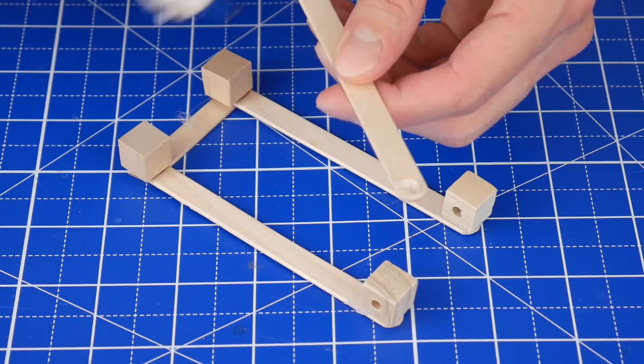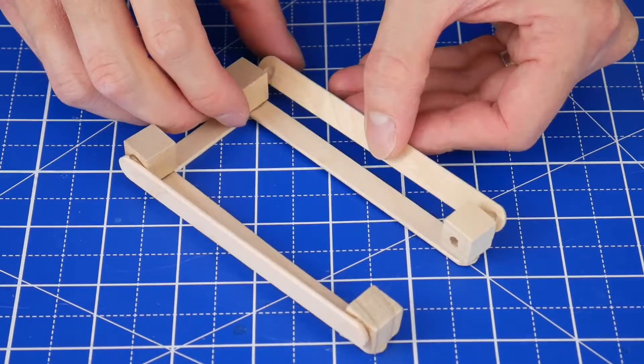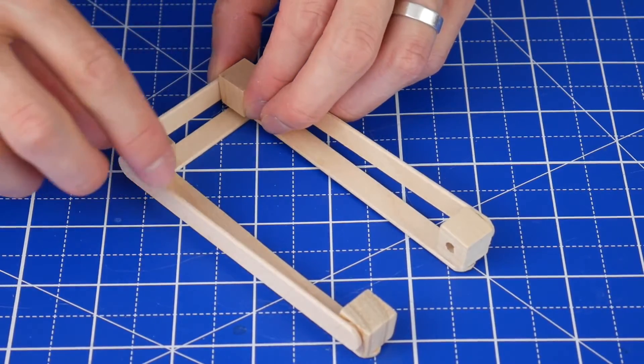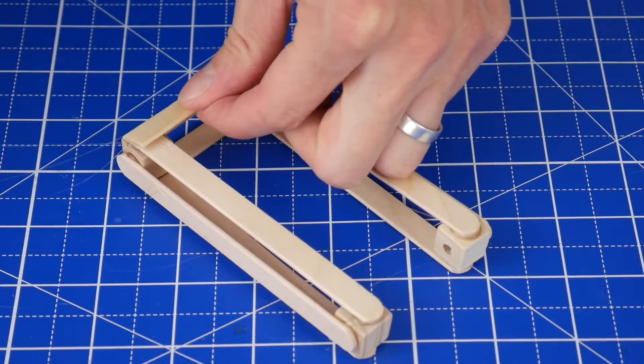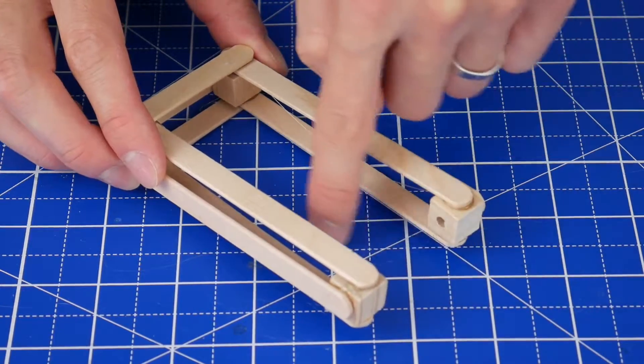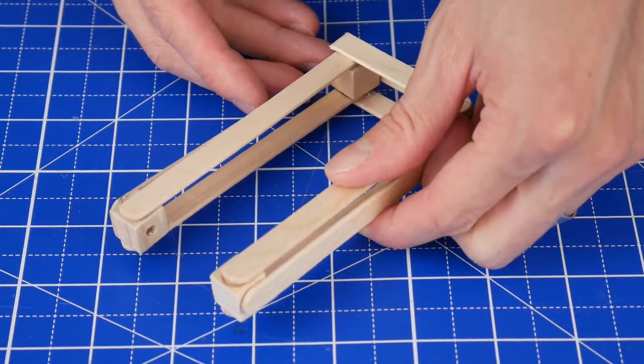Then glue more sticks all along the sides of the base and on the top. Make sure not to glue any sticks in this gap between the two cubes with holes.